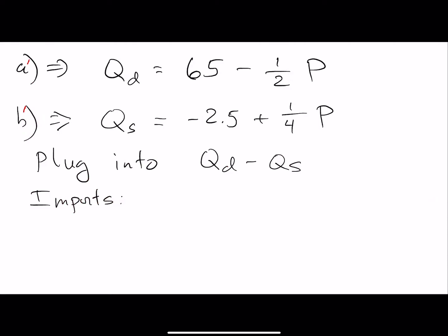Looking at this one right here, we isolate Qs and we get this b prime. Now we have an expression for the quantity demanded and quantity supplied as a function of price. If we take that and plug it into this equation, so Qd minus Qs, what we're going to get is 65 minus one half P, that's the quantity demanded, and we subtract out the value for the quantity supplied.